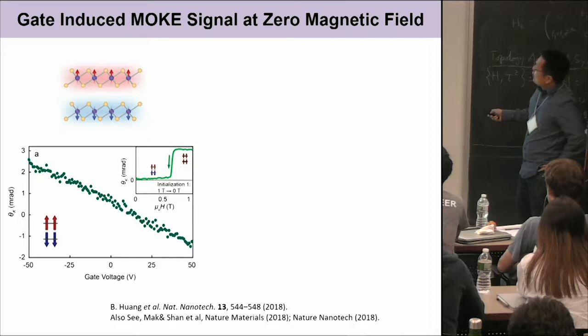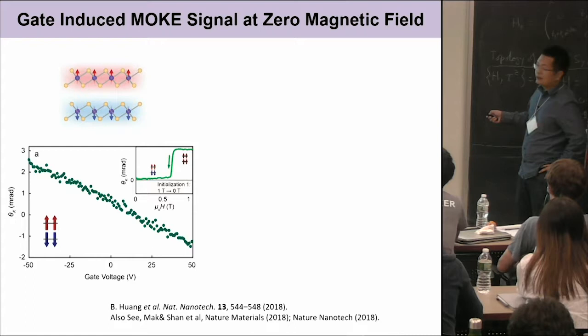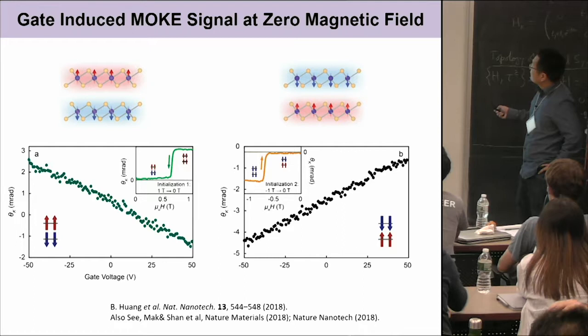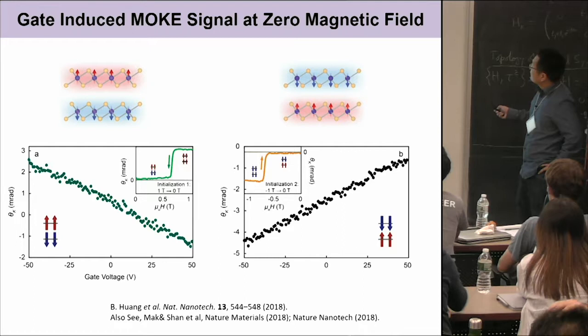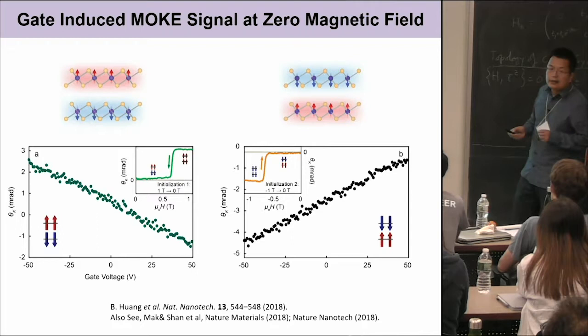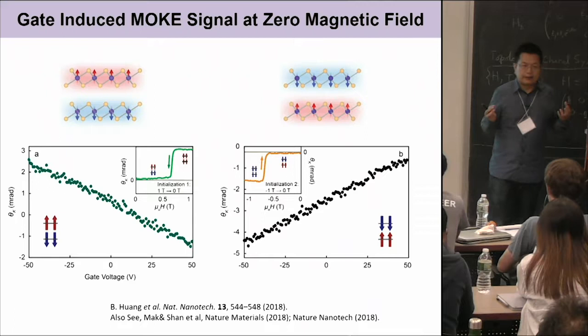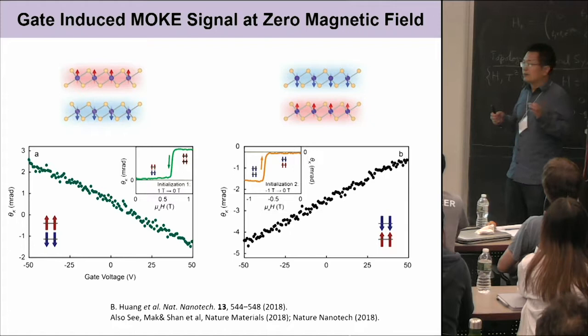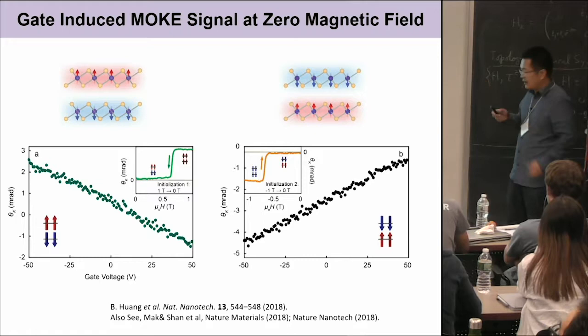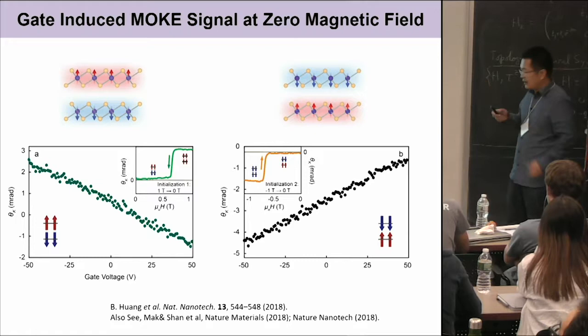We can prepare which antiferromagnetic state we have. If the top layer magnetization points up and the bottom layer points down, the slope is negative. Then if we prepare the state with top layer pointing down and the bottom layer pointing up, the Kerr rotation slope is exactly positive — opposite to the other state. Even though these two states have zero net magnetization and we cannot tell which is which by regular Kerr measurements, by looking at the sign of the slope we can distinguish these two states. The amplitude of these two slopes is exactly the same, but the sign is opposite because they are the two time-reversal images of each other.